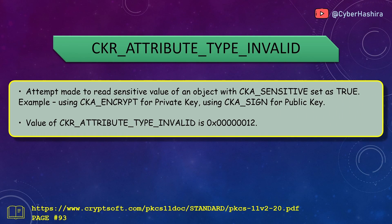CKR_ATTRIBUTE_TYPE_INVALID is returned when an invalid attribute is specified in a template. For example, private keys are used to sign and decrypt, so specifying CKA_ENCRYPT for a private key returns this error. Similarly, public keys are used for encrypting and verifying, so adding CKA_SIGN to a public key template returns CKR_ATTRIBUTE_TYPE_INVALID. Its value is 12, on page 93.